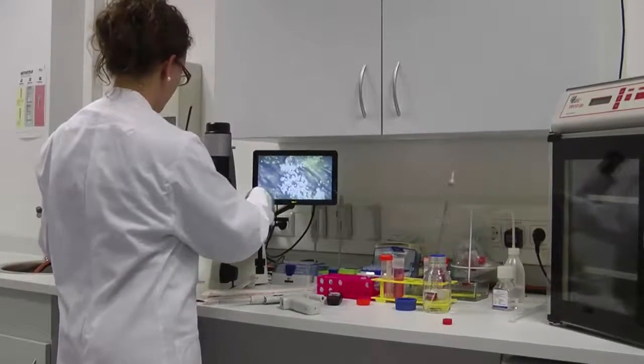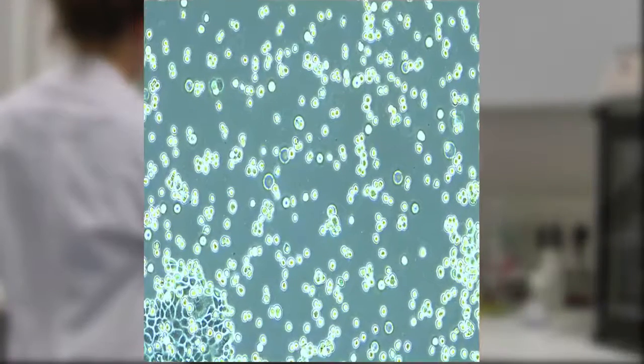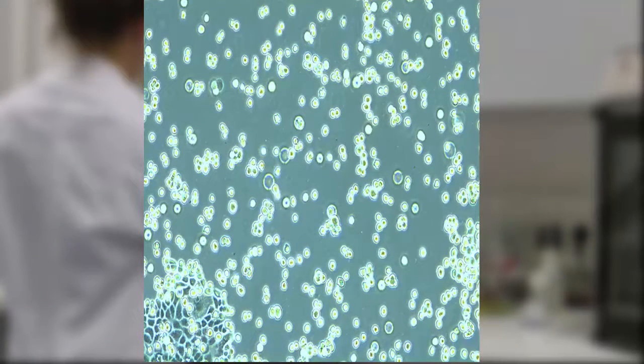Detached cells should be round-shaped and free-floating in the trypsin solution. As soon as cells have detached, add 5 ml culture medium to the dish to inactivate the trypsin.